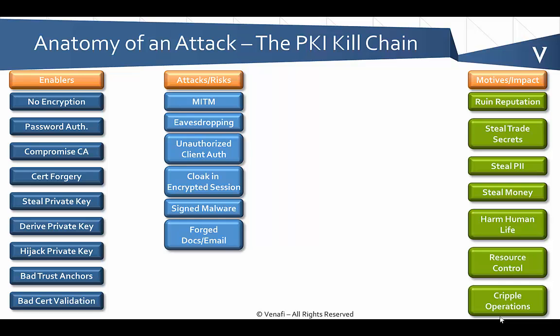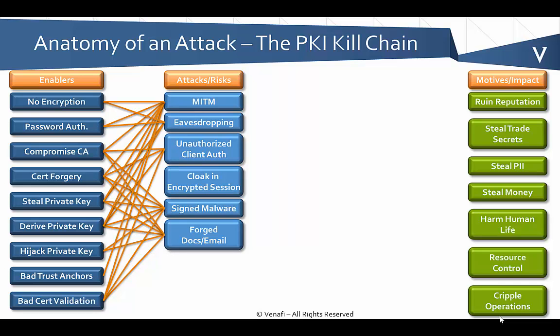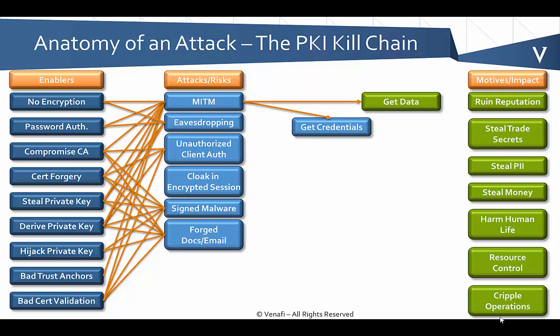Each one of these enablers enables one of these attacks, and there are quite a few different paths an attacker can leverage to jump from bad practices to a particular attack. If an attacker is able to get a rogue certificate and launch a man-in-the-middle attack, they can start eavesdropping on communications and see all the data going back and forth — financial data, trade information, and most importantly, credentials. If they can get access to credentials, they can start logging in and performing their own interactive operations.